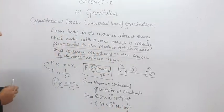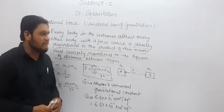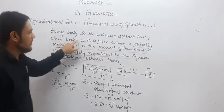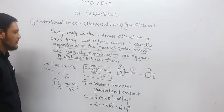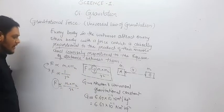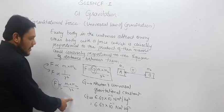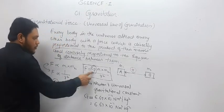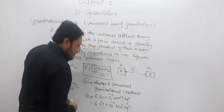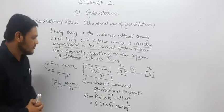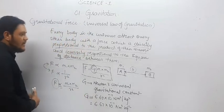Student, this is a very important part of our chapter. Many derivations depend on Newton's universal law of gravitation. Let me revise it one more time. Every body in the universe attracts every other body with a force directly proportional to the product of their masses and inversely proportional to the square of distance between them. So, F proportional to m1 times m2; F proportional to 1 by r square. Combining: F proportional to m1 times m2 by r square. Therefore, F equals G times m1 times m2 divided by r square, where G is Newton's universal gravitational constant, equal to 6.67 times 10 to the power minus 11 Newton meter square per kg square.